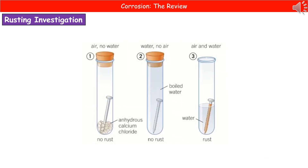A typical experiment you've probably done at some point in your time at school is a rusting investigation, where you've put iron nails in test tubes with different conditions. Three of those conditions are given in the diagram there. On the far left, we've got a chemical called anhydrous calcium chloride, and that's going to remove any water from the air, so we've got air but no water.